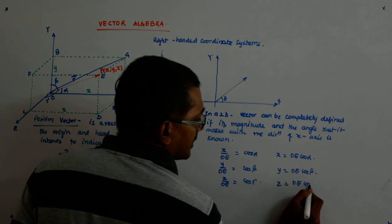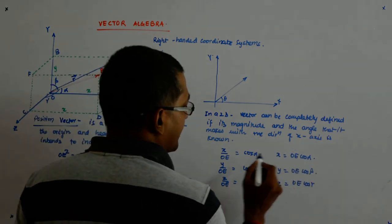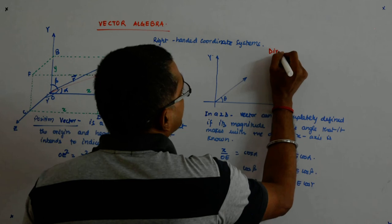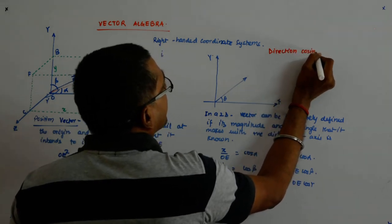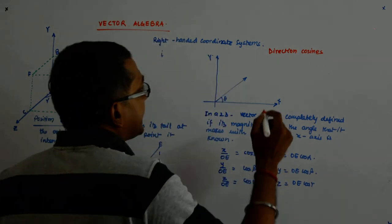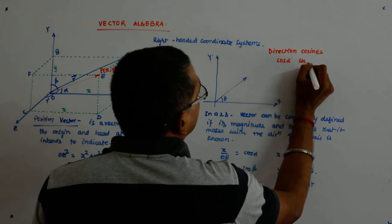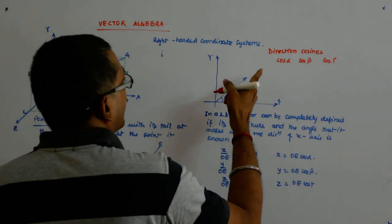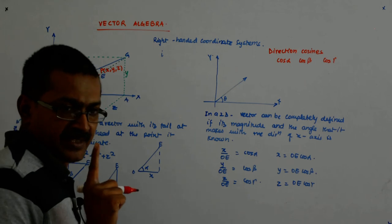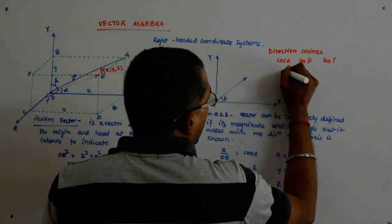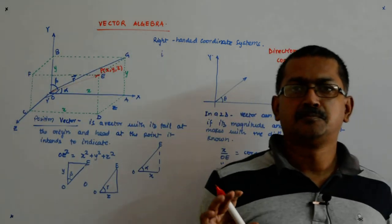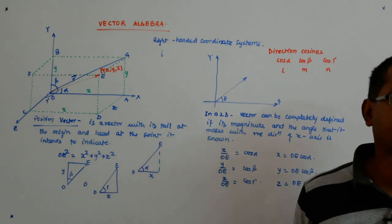So z upon OE is cos gamma, meaning z equals OE·cos gamma. These values — cos alpha, cos beta, cos gamma — are called the direction cosines. They are named l, m, n respectively by convention: l = cos alpha is the angle the vector makes with the positive x-axis; m = cos beta with the positive y-axis; n = cos gamma with the positive z-axis.